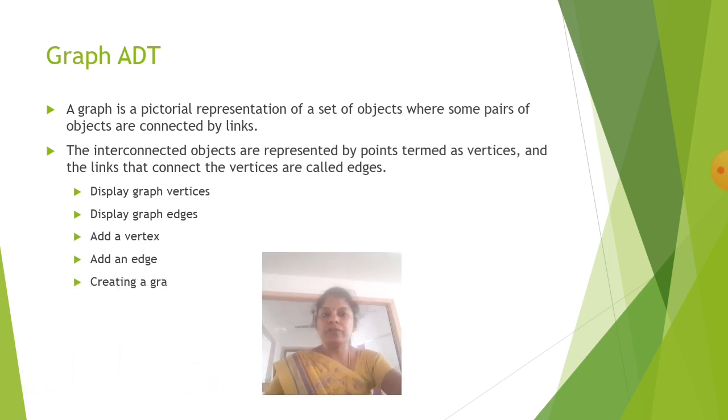A graph is a pictorial representation of a set of objects where some pairs of objects are connected by links. The interconnected objects are represented by points termed as vertices and the links that connect the vertices are called edges.